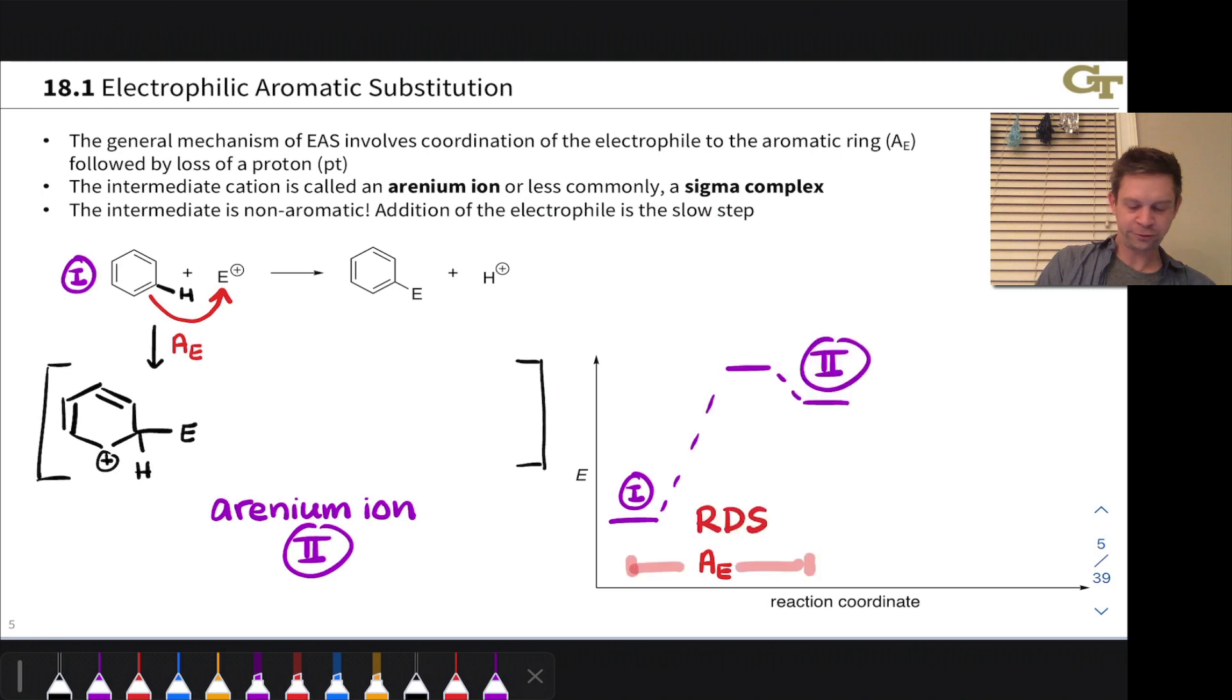This means that this first step on a reaction coordinate diagram is going to be way, way, way uphill. And it's the rate determining or the slow step of electrophilic aromatic substitutions. Universally, this first step is the slow step of the two.